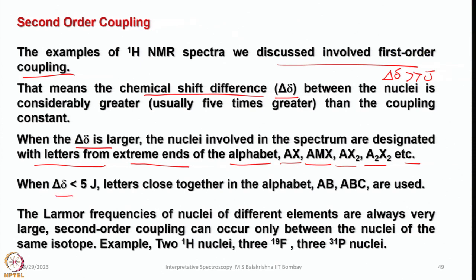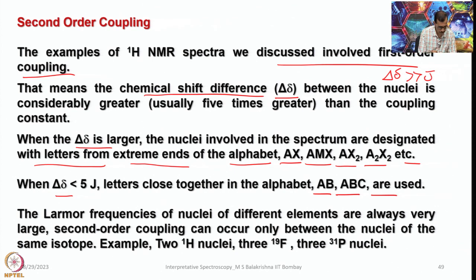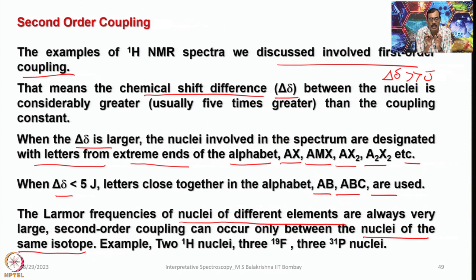In first order spectra, the Larmor frequencies of nuclei of different elements are always very large. Second order coupling can occur only between nuclei of the same isotope — one should remember that. Nuclei of the same isotope only can exhibit second order coupling. For example, protons on the same carbon atom, when they are chemically equivalent and magnetically non-equivalent, we come across this situation; but vicinally substituted fluorine and hydrogen can never show second order coupling — that is always first order.